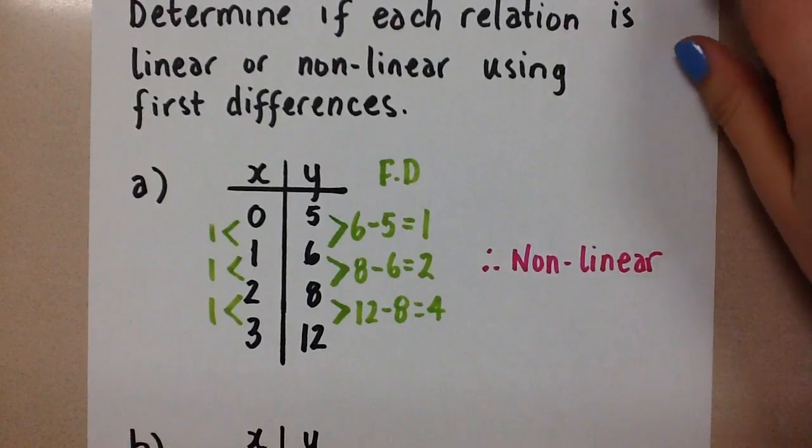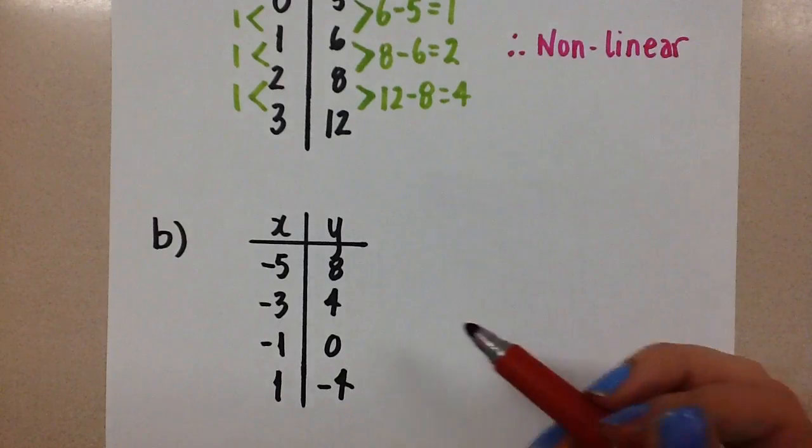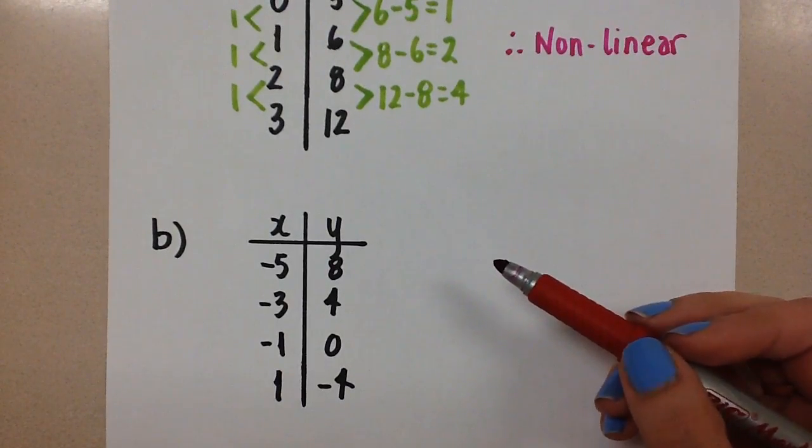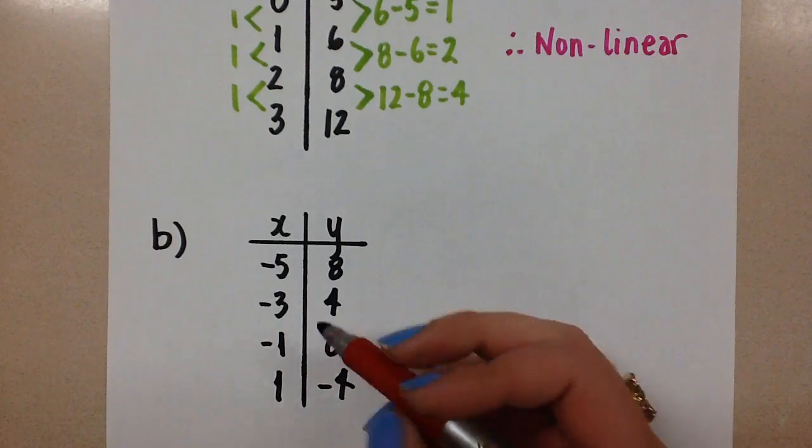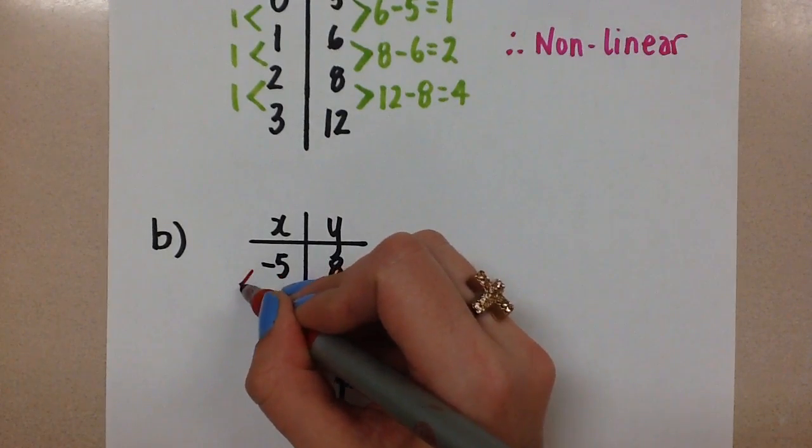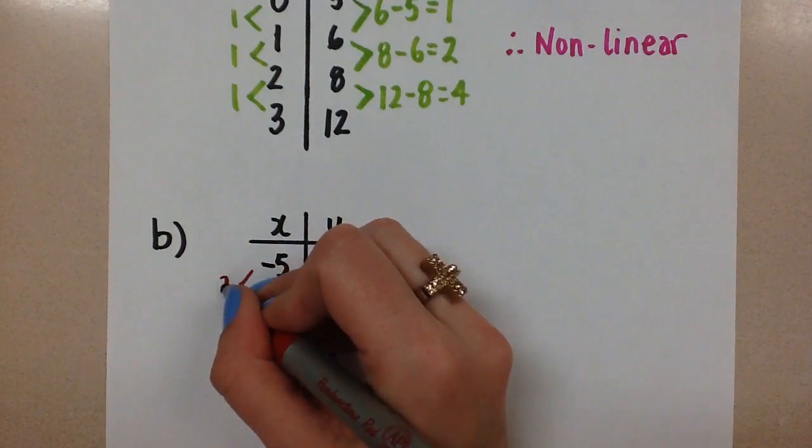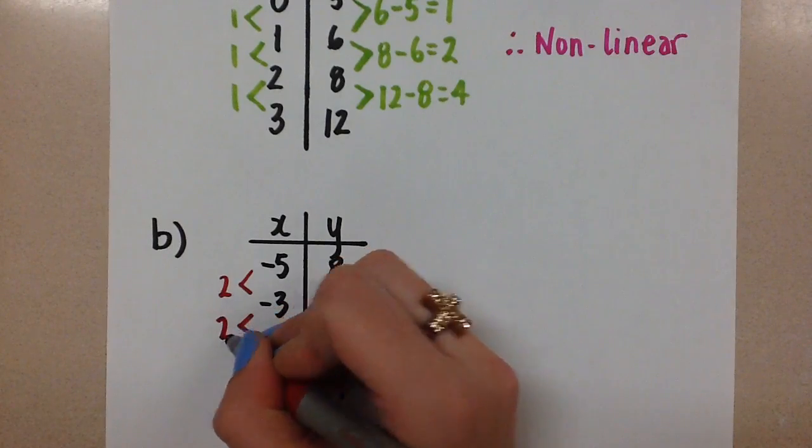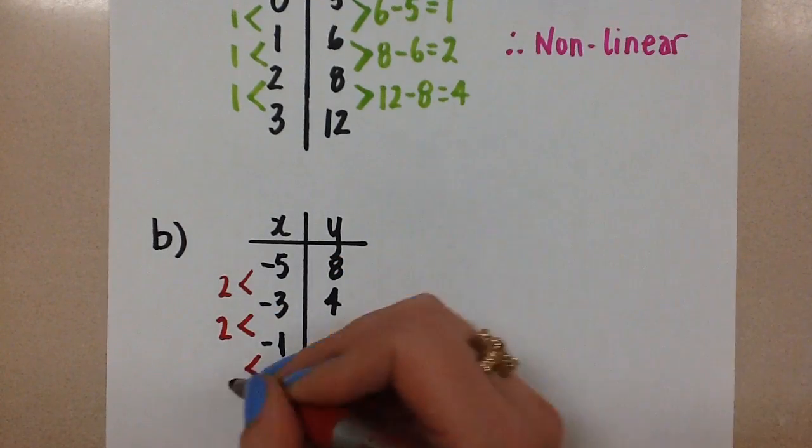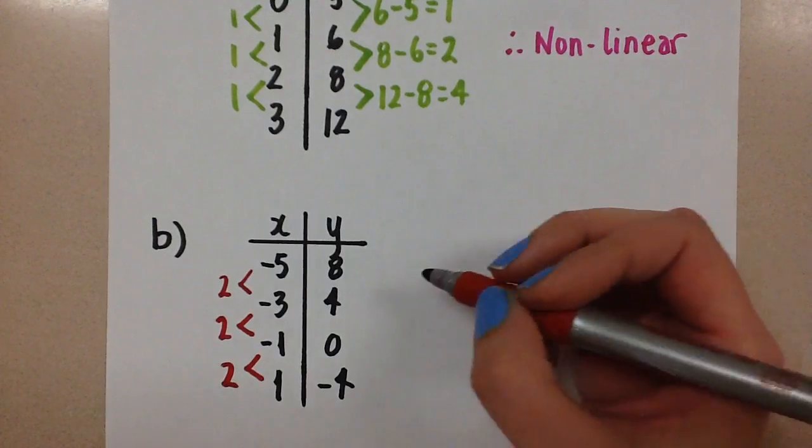So now, let's look at the next table of values that we have. Here first, before we check the first differences, let's make sure that the x values are increasing by a constant amount. So here, from negative 5 to negative 3, we're going up by 2. From negative 3 to negative 1, going up by 2. And from negative 1 to positive 1, we're going up by 2. So we are okay to proceed with our first differences.